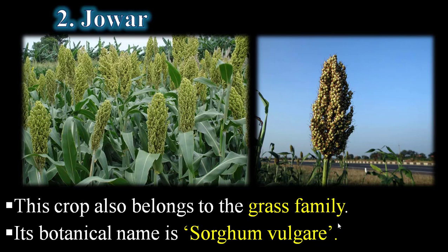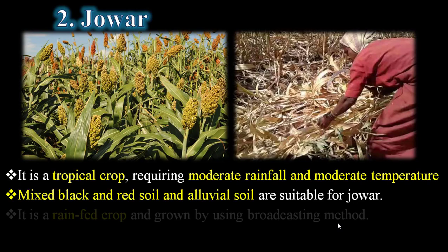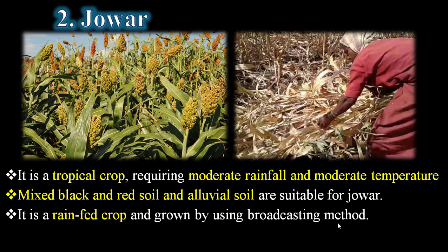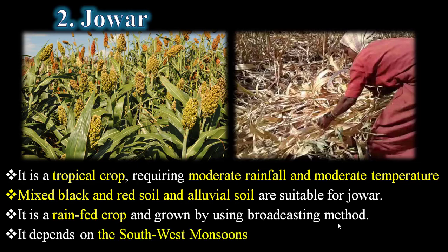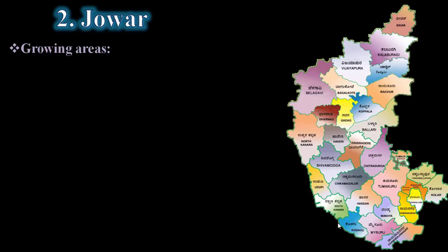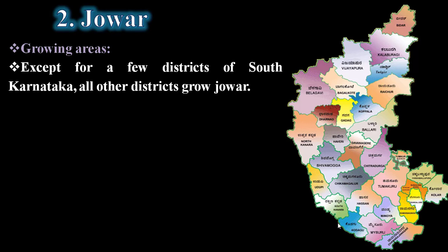This crop belongs to the grass family. Its botanical name is Sorghum vulgare. Jowar is a tropical crop requiring moderate rainfall and moderate temperature. Mixed black and red soil and alluvial soil are suitable for jowar. It is a rain-fed crop grown mainly by using the broadcasting method, largely depending on the southwest monsoon.